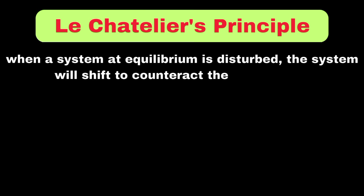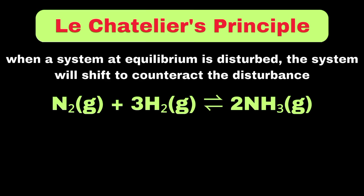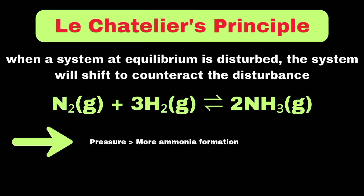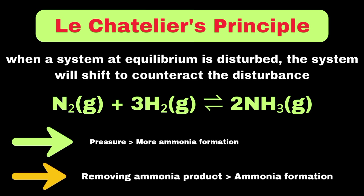To make it clear, let's look at what happens in the production of ammonia. If we increase the pressure on the system, it will shift to produce more ammonia because this reduces the number of gas molecules, counteracting the pressure increase. Similarly, removing ammonia product causes the system to produce more ammonia to replace what was removed.